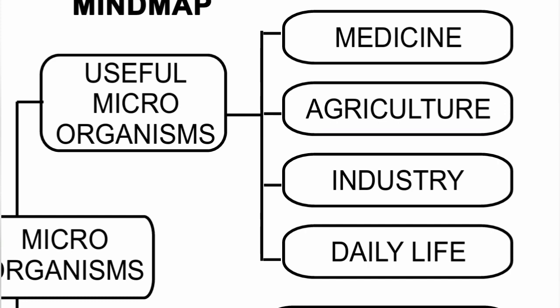In agriculture, microorganisms act as decomposers, producing natural fertilizer, and are involved in nitrogen fixation. In industry, microorganisms are used for sewage treatment, production of biogas, production of alcohol and wine, and microbes in retting and tanning.